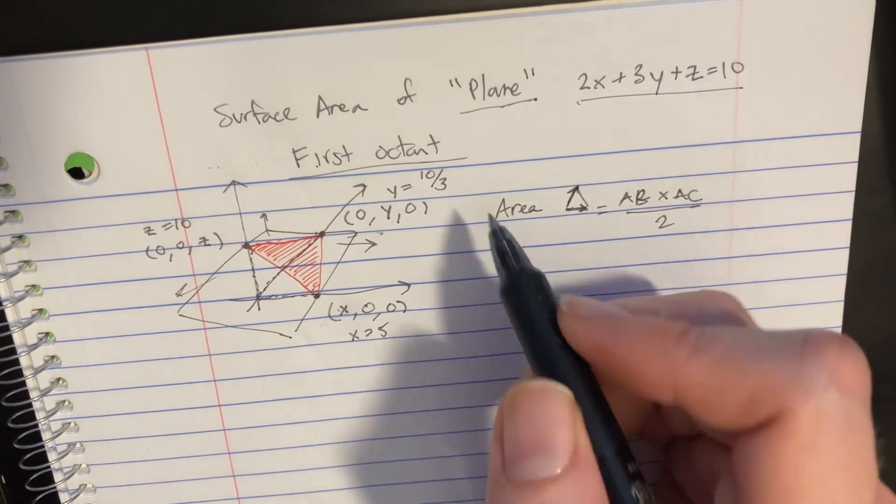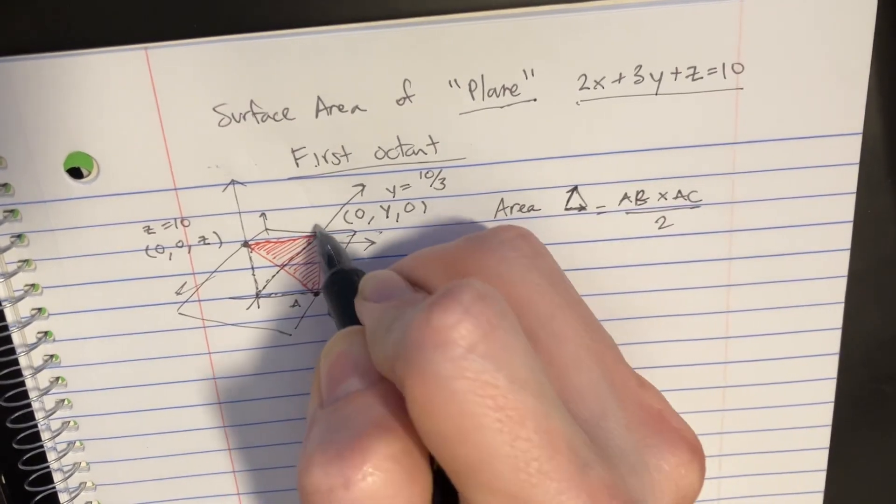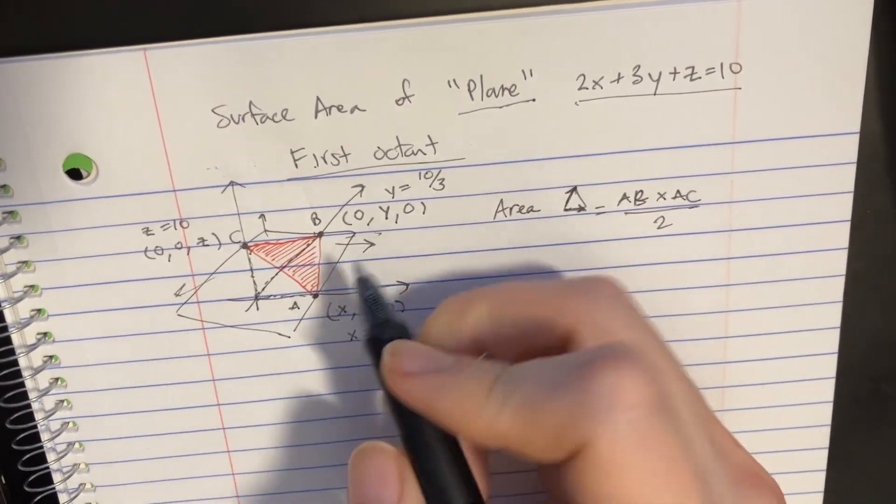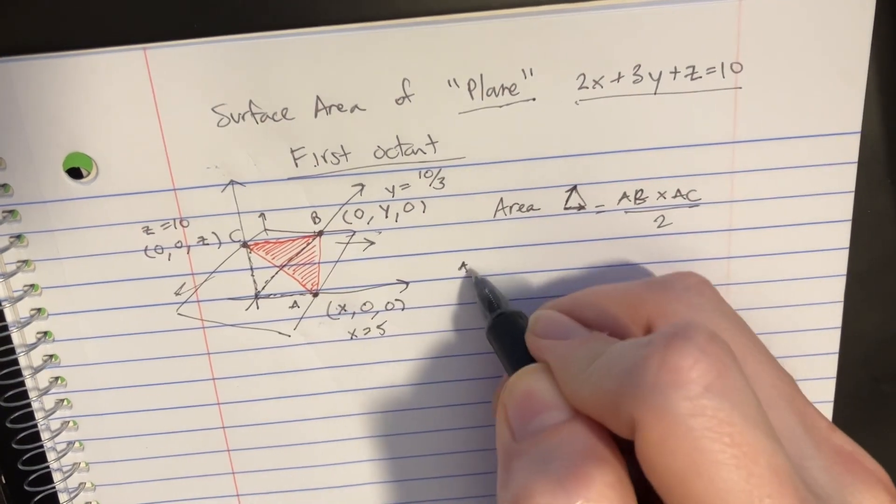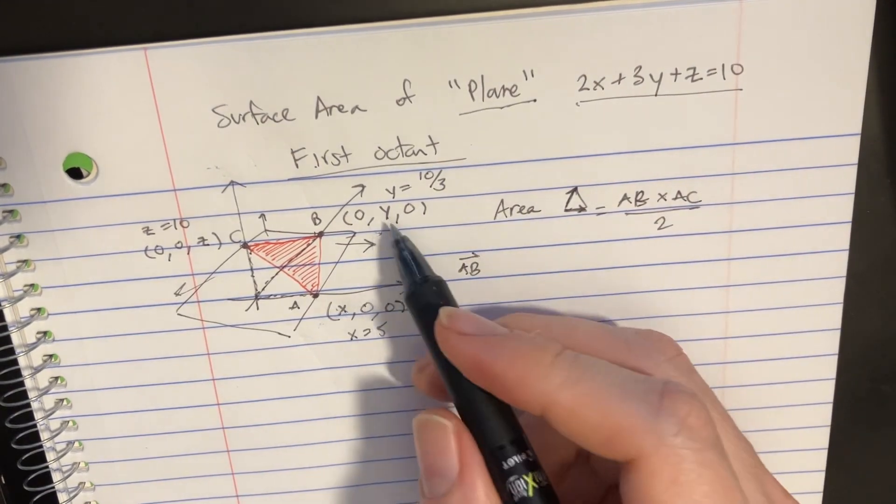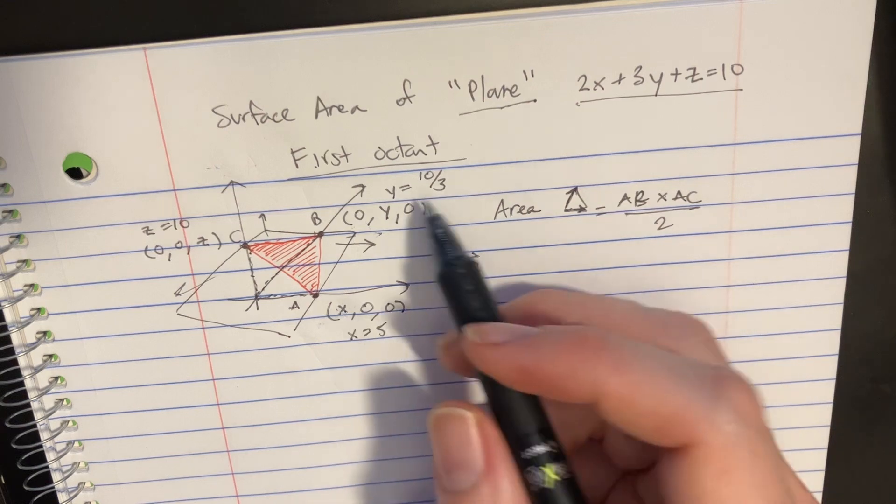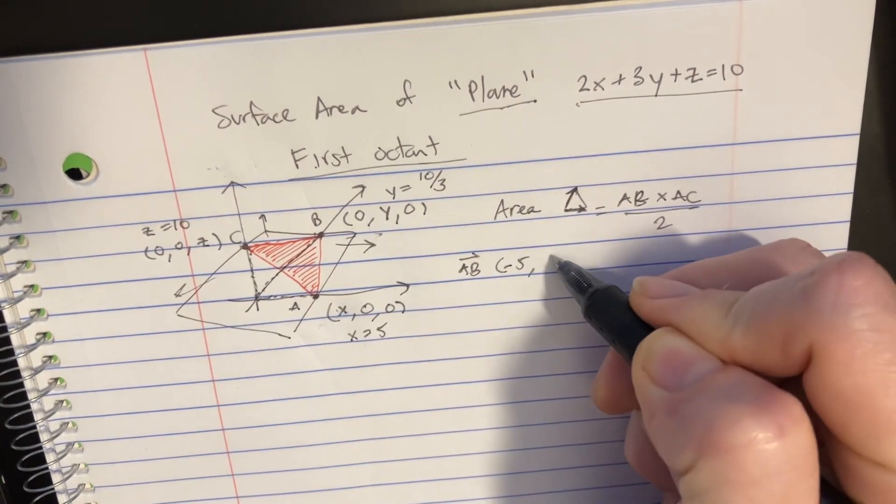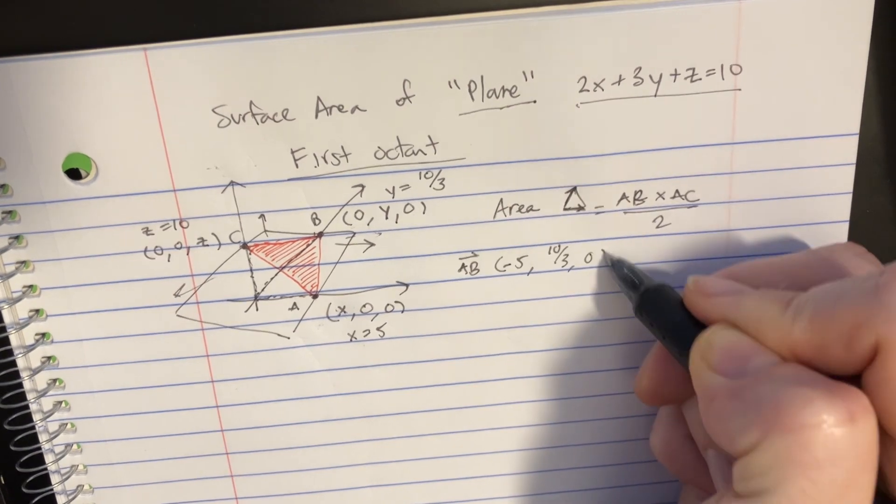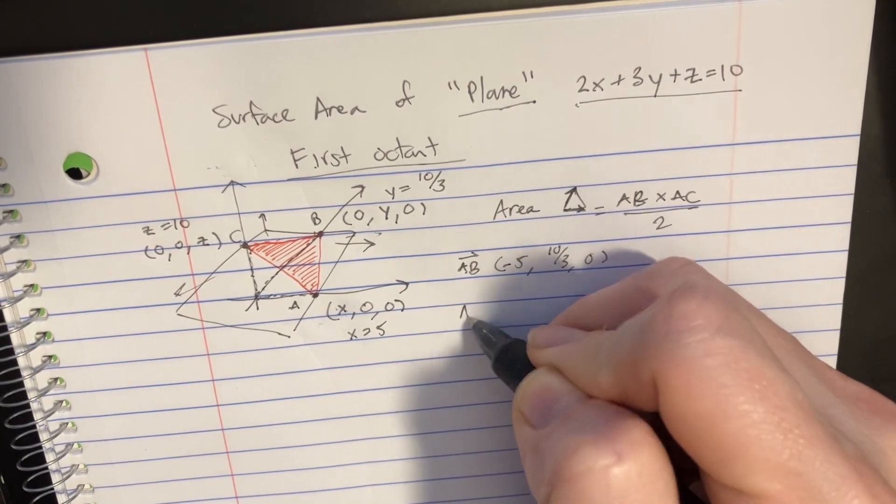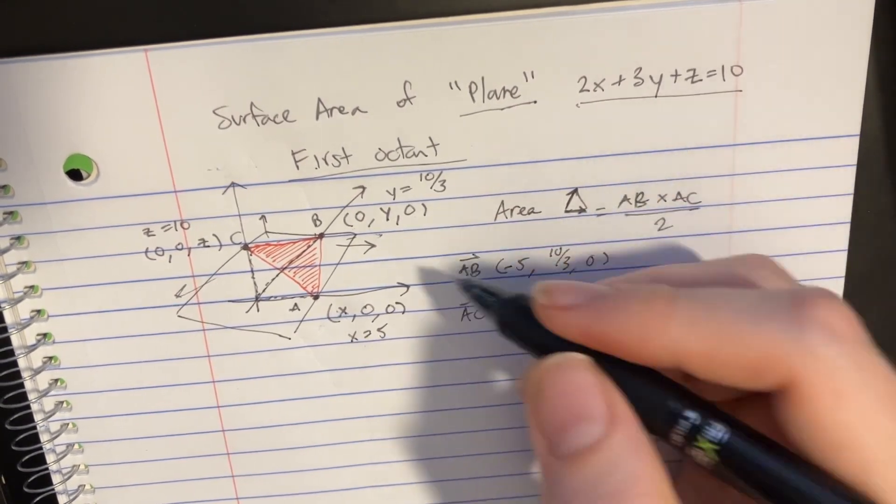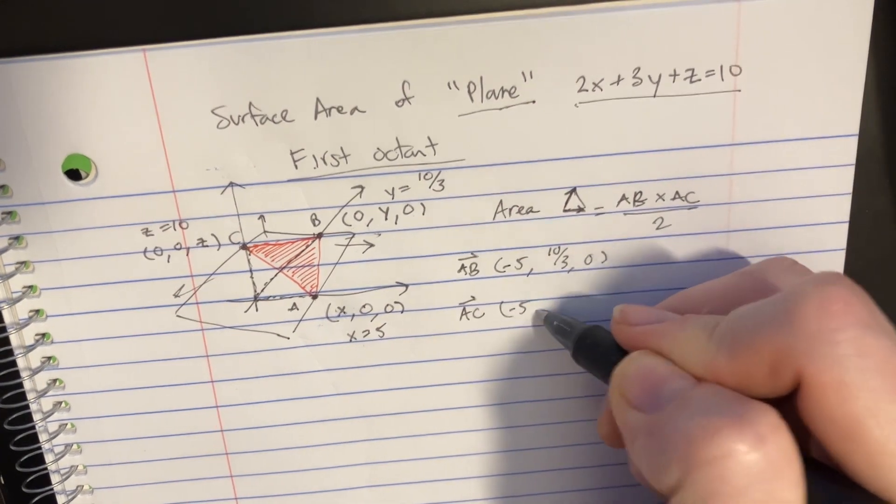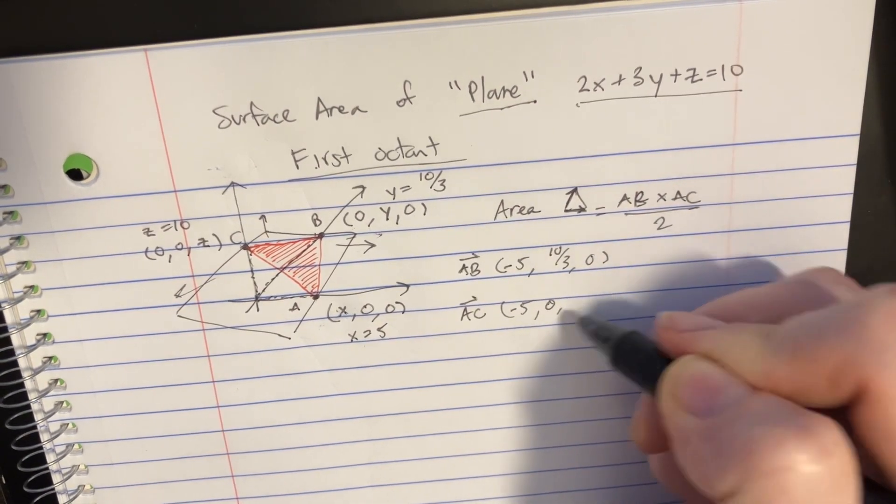We're going to try to do that. I'm going to call this point A, I'll call this point B, and this point C. So vector AB is going to be this point minus that point, so it's minus 5, 10 over 3, and 0. Then we have AC which is minus 5, 0, and 10.